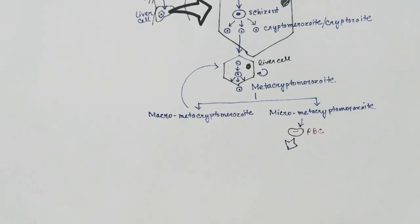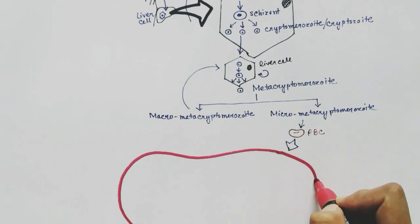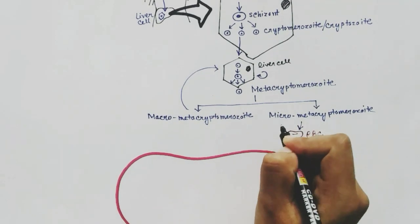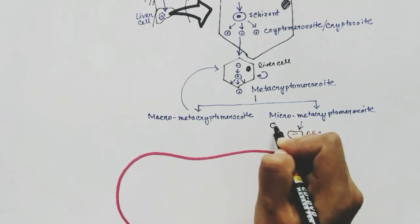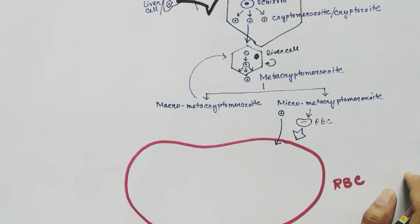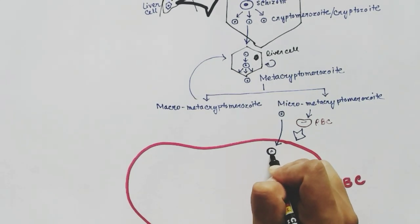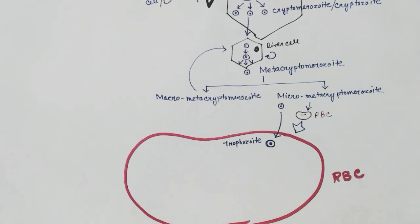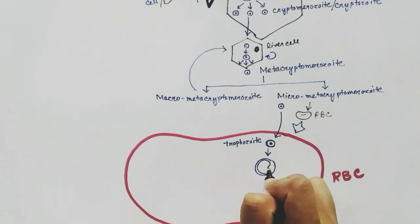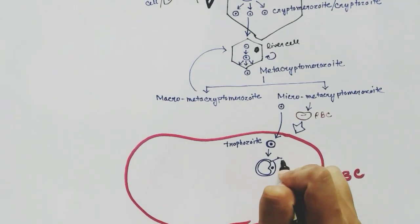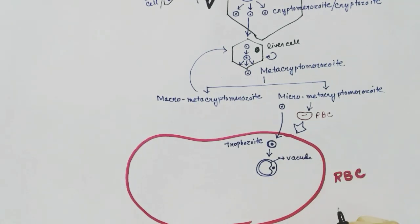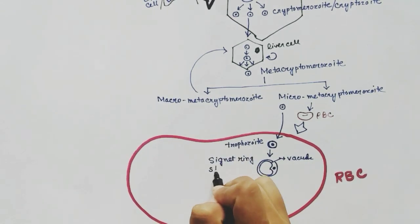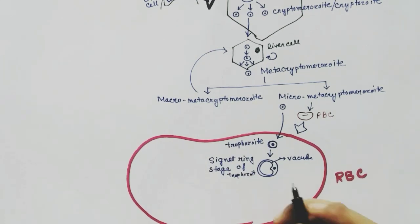Let us zoom into one RBC and see what happens inside. When a micro metacryptomerozoite enters a red blood cell, the form produced is called a trophozoite. The trophozoite looks spherical and the nucleus is quite prominent. The shape then changes — a vacuole appears that becomes so large it pushes the nucleus to the periphery, creating a ring-like structure called the signet ring structure, or signet ring stage of the trophozoite.